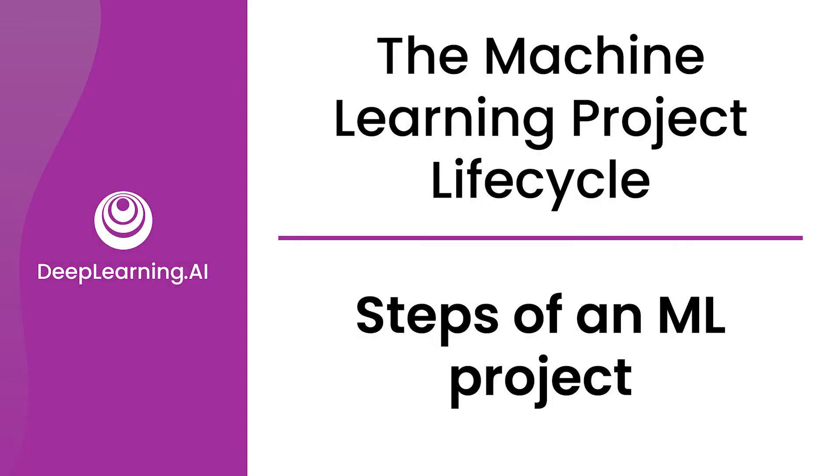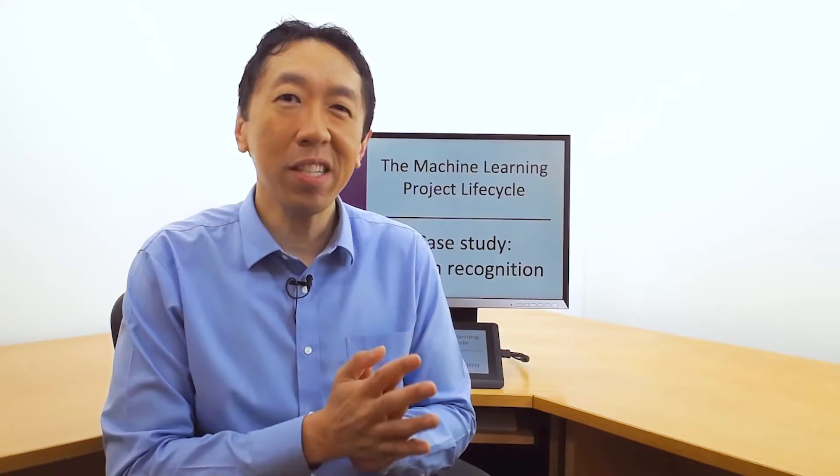One of the successes of deep learning has been speech recognition. Deep learning has made speech recognition much more accurate than maybe a decade ago, allowing many of us to use it in smart speakers, smartphones, voice search, and other contexts. Let's use the machine learning project life cycle to step through a speech recognition example so you can understand all the steps needed to actually build and deploy such a system.